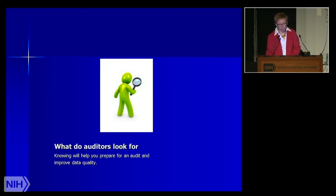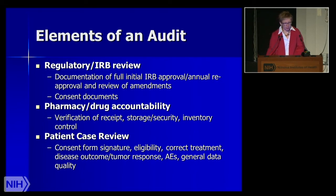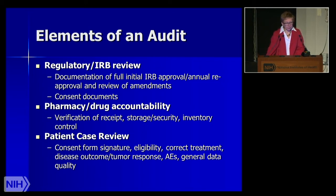Knowing what auditors look for helps improve the quality of any program. Most audits will look at regulatory IRB information — the full initial review as well as annual reviews. They'll look at consent documents, pharmacy drug accountability, verification of receipt and storage and security, as well as inventory control. The biggest portion they review are the patient case reviews — they'll look at the consent for patient signature, eligibility criteria, whether correct treatment was administered, disease outcome and tumor response, adverse events, and general data quality.